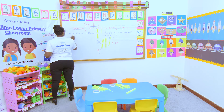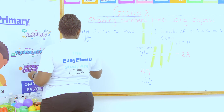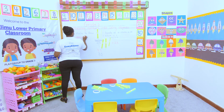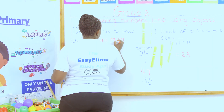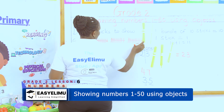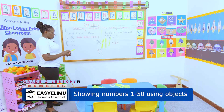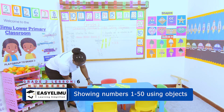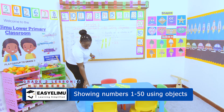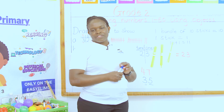Remember the place value — this is ones and this is tens. When drawing sticks, show how many ones and how many tens. One, two, three, four, five, six, seven, eight, nine, ten — that is one bundle. Another bundle, another bundle — then with two ones. I have shown number 32 using bundles of sticks. Any problem, any question? It was nice having you around and I hope to see you in the next lesson. Thank you very much.